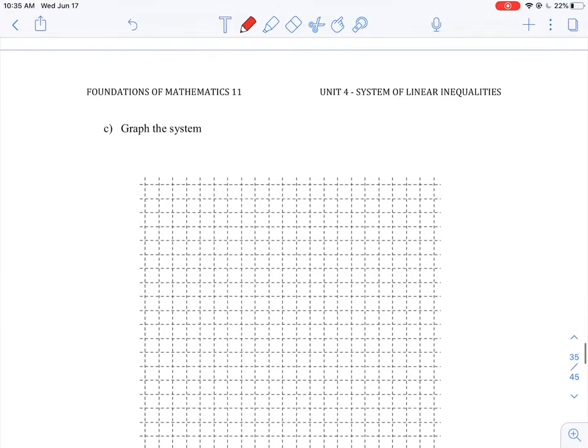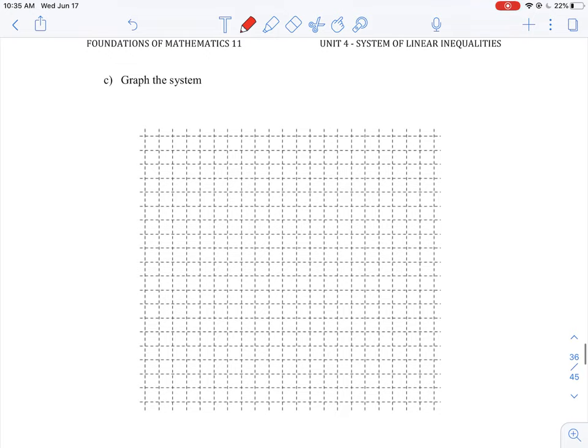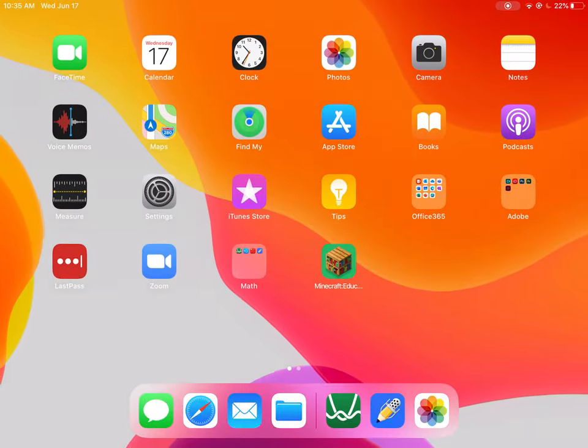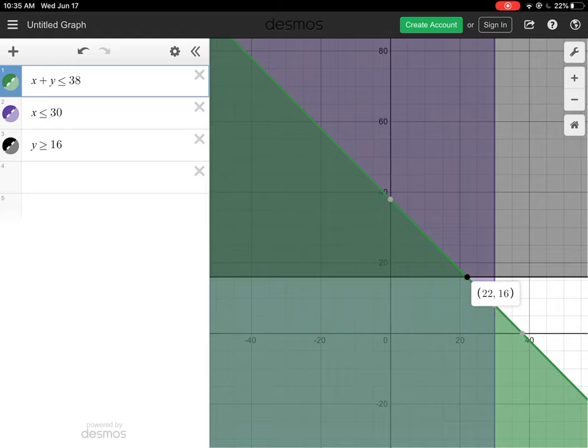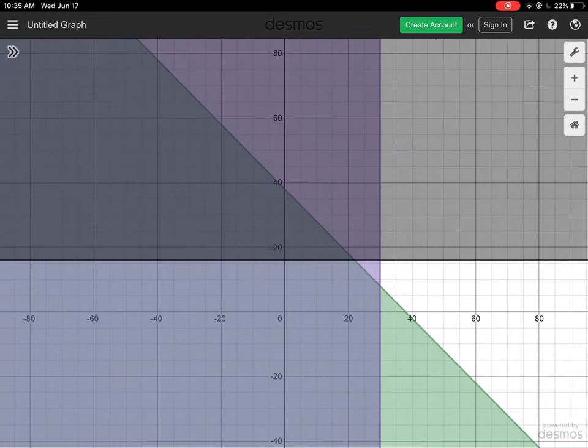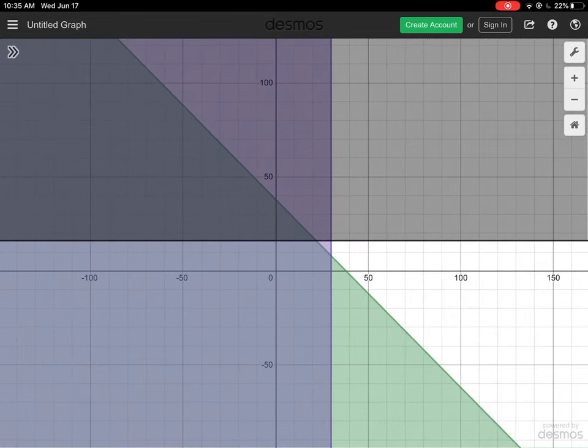So then moving on to the other question here, we now have to graph the system. Again, this is one of those problems where the numbers are getting a little bit larger. We have 30 and 38 to graph them, so I'm going to switch over to the Desmos tool again. Just to speed things up, I pre-entered the equations. So we have x plus y is less than 38, x is less than 30, y is greater than or equal to 16. So if I look at this equation, I'll just zoom out here.